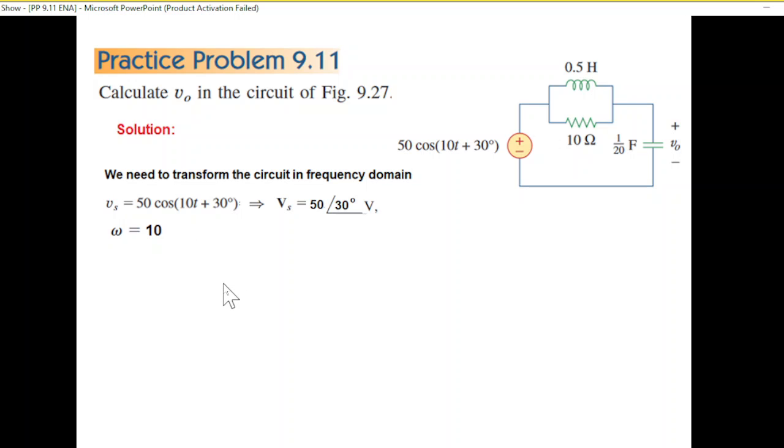For the capacitor, it can be written as 1/(jωC). Our capacitor is 1/20 F, so we write 1/(j10 × 1/20). When you solve, it will be -j2.